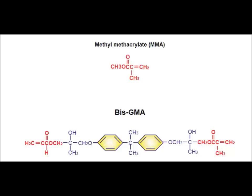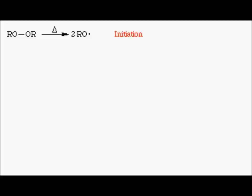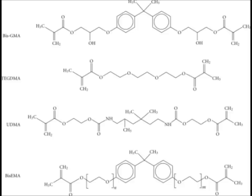Composite resin is based on dimethacrylate monomers — we call it 'di' because there are two methacrylate groups at both ends of the monomer. In free radical polymerization, each molecule grows by addition of a monomer to a terminal free radical reaction site. This categorizes dental composite conversion into chain growth polymerization.